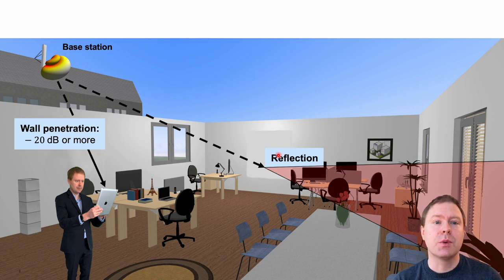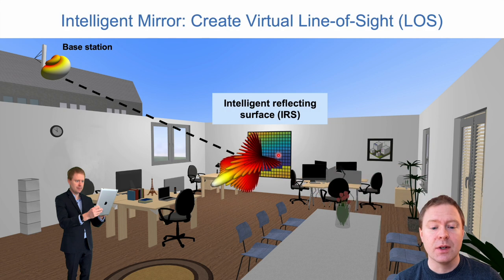But what if you at this point would put up an intelligent mirror, something that we call an Intelligent Reflecting Surface or IRS? Some people are also calling it a Reconfigurable Intelligent Surface or Software Control Meta Surface.